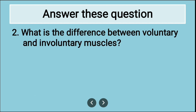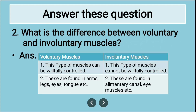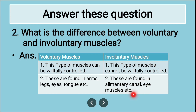Second long answer: What is the difference between voluntary and involuntary muscles? Voluntary muscles can be willfully controlled, whereas involuntary muscles cannot be willfully controlled. Voluntary muscles are found in the arms, legs, eyes, tongue, etc. Involuntary muscles are found in the alimentary canal, eye muscles, etc.